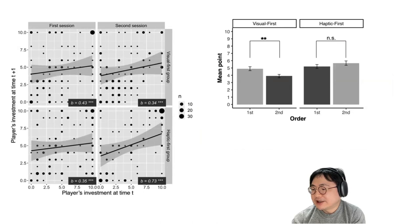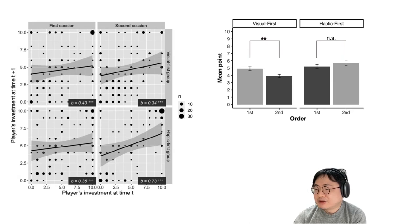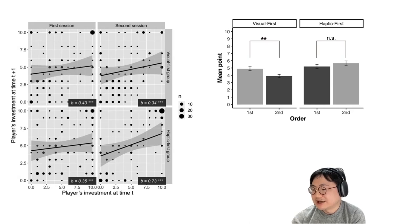In the second session of the haptic first group, the decrease in investment points of the backward player was weaker. The average number of investment points for the visual first and haptic first groups is shown in the left figure. In the visual first group, the first session was significantly higher than the second session. However, in the haptic first group, there was no significant difference between the first and second session.